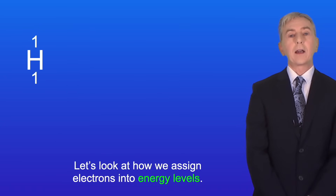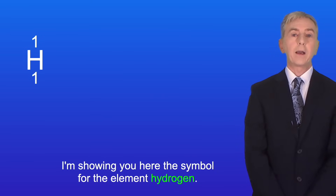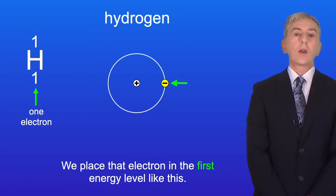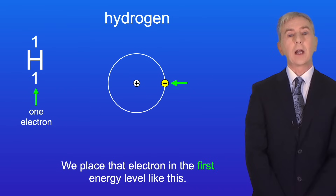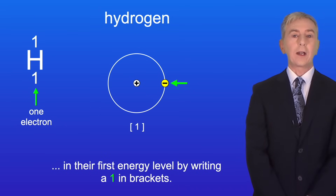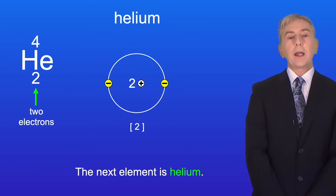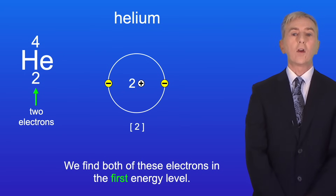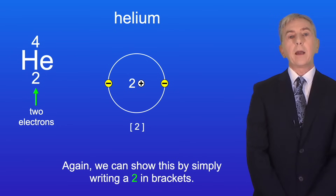Let's look at how we assign electrons into energy levels. Here is the symbol for hydrogen. Hydrogen atoms have one electron, so we place that electron in the first energy level, which we can write as (1). The next element is helium — helium atoms have two electrons and both are found in the first energy level, which we write as (2).